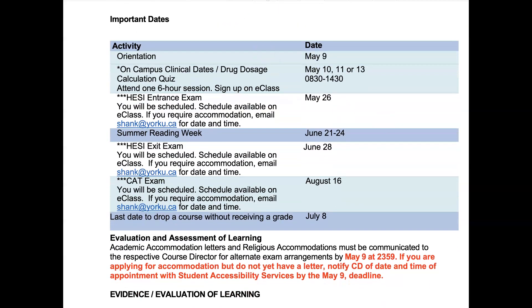Moving into the important dates: orientation is May 9th. Your on-campus clinical dates will be one of the listed dates, and you will be writing your medication calculation quiz on that date. Your first HESI entrance exam is May 26th and this is not negotiable — please make sure you are not in clinical on this day. If you have accommodation, you need to email Shandana at the provided email address for a date and time to arrange writing with accommodation.